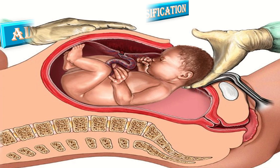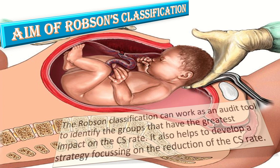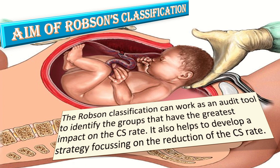What is the aim of Robson classification? The Robson classification can work as an audit tool to identify the groups that have the greatest impact on the cesarean section rate. It also helps to develop a strategy focusing on the reduction of cesarean section rate.